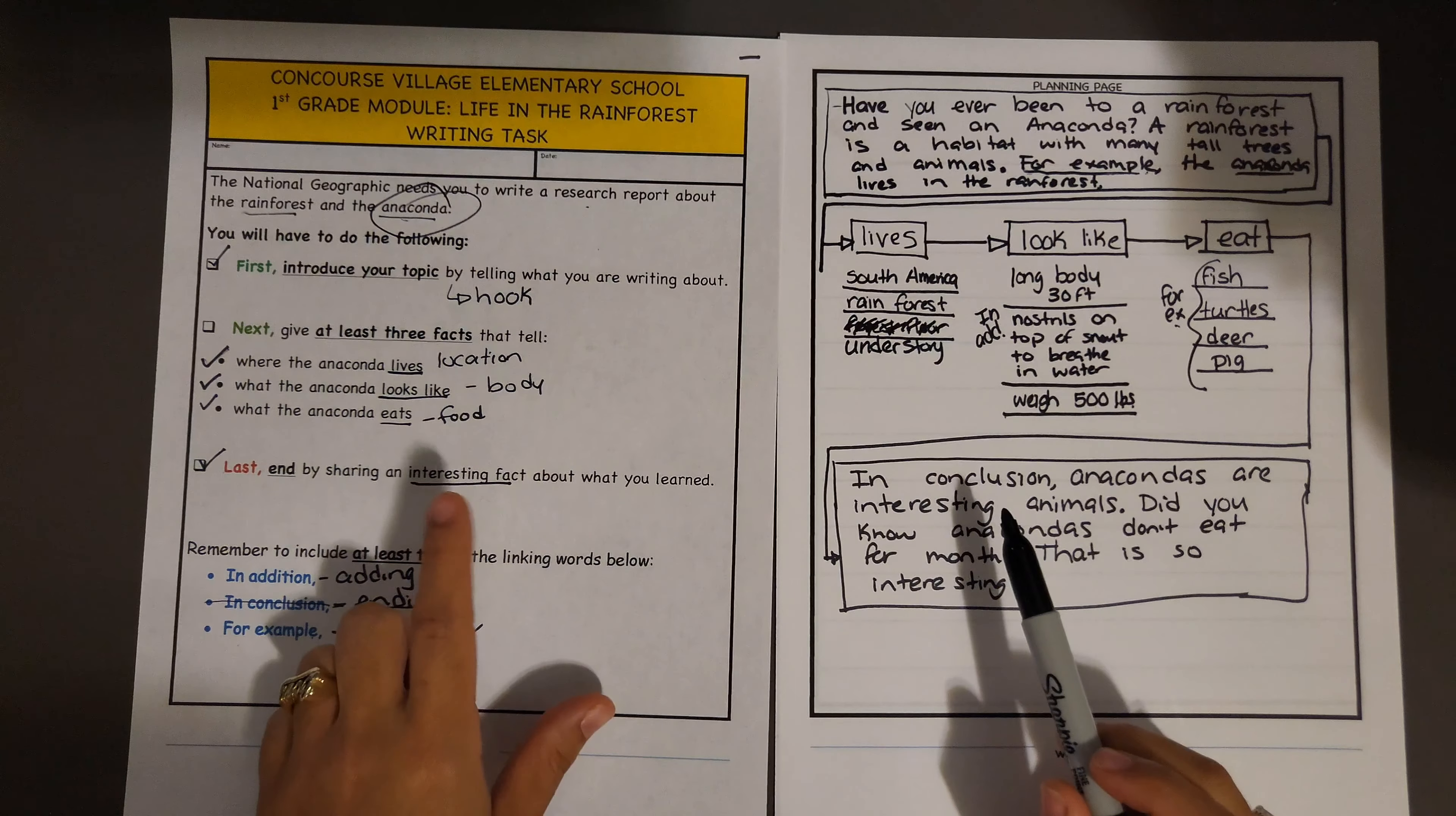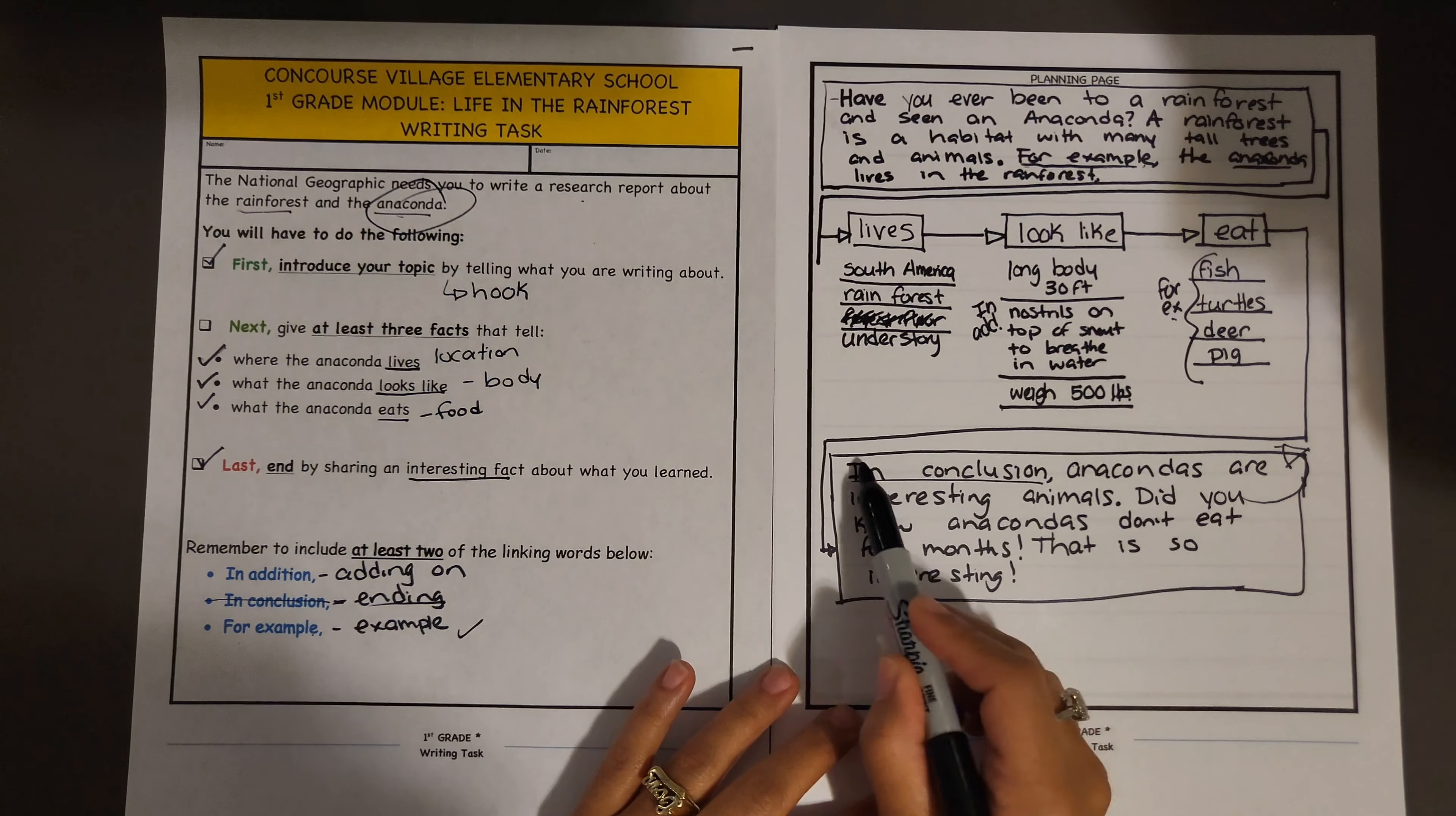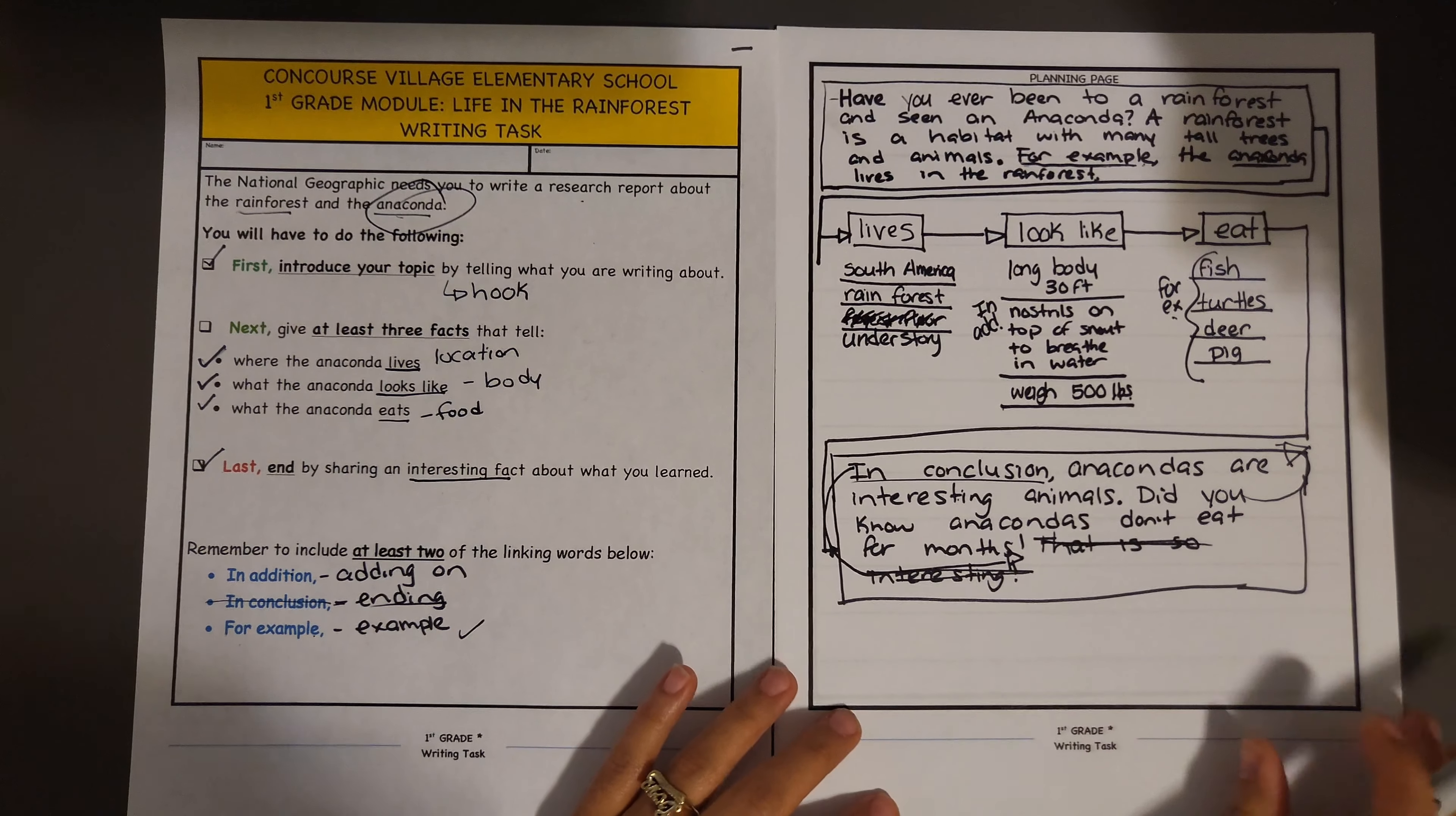Interesting facts and then 'in conclusion.' You know what, I think I'm going to switch something up here. I think we need to start with our interesting facts and then give the 'in conclusion,' because this is the final sentence—after this you're not writing anymore. So I'm going to switch this sentence to the end and get rid of this because I'm already saying it here. It's going to say 'Did you know anacondas don't eat for months? In conclusion, anacondas are interesting animals.' Period. Now time for writing.